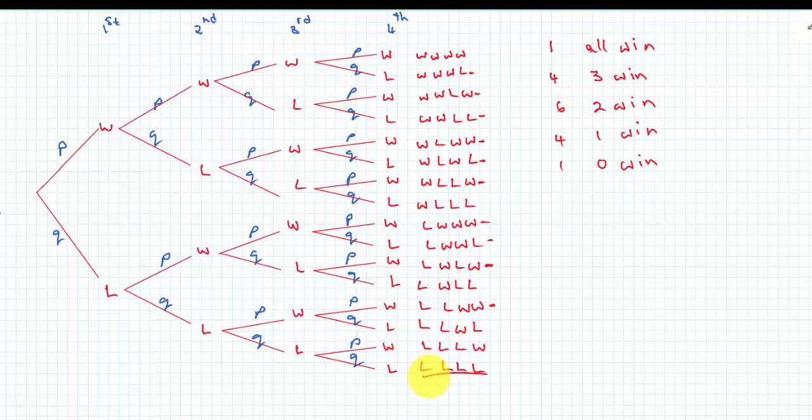That's one, four, six, four, one. That's awfully like our binomial coefficients. So the first one would be four choose four. If success is winning, four choose three, four choose two, four choose one, four choose zero. From four games we choose four wins, from four games we choose three wins, and so on.